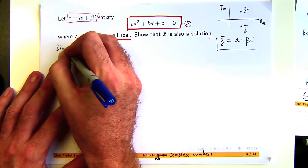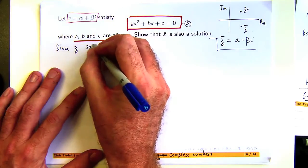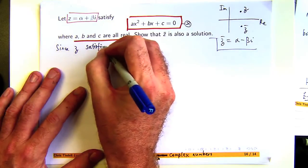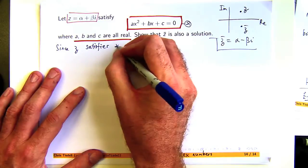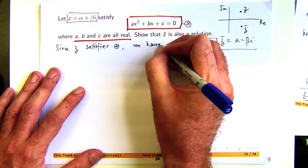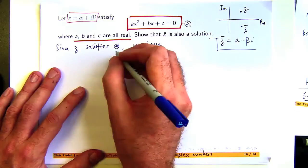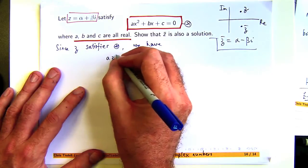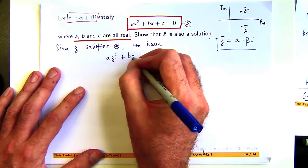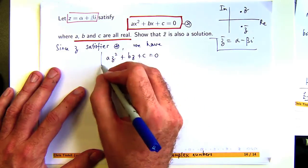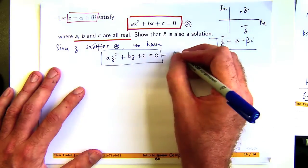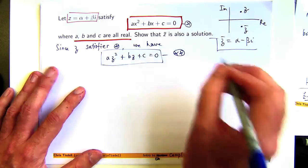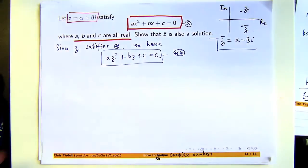So since, by assumption, z satisfies star, we have the following: az squared plus bz plus c equals zero. And we're going to call that double star. We're going to take the conjugate of both sides of double star, and then we're going to use the properties of the conjugate, which are kind of cool.